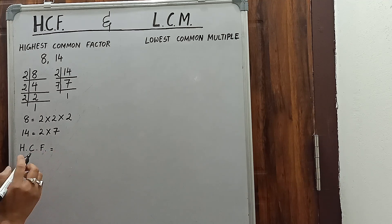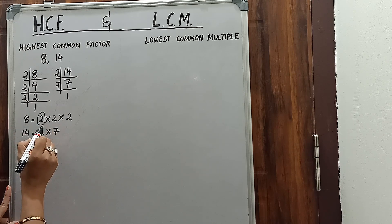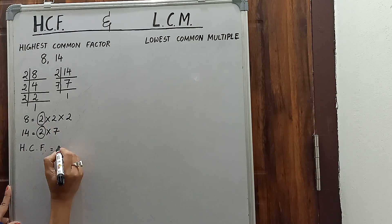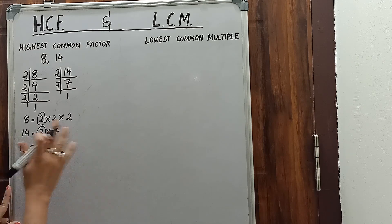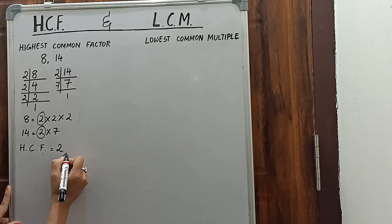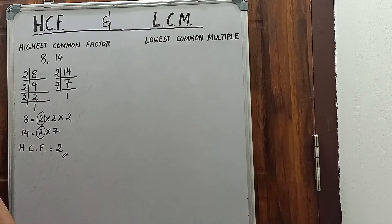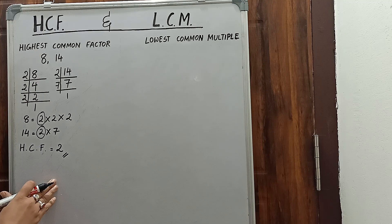HCF equals 2. We will see the common numbers among these. 2 is the common number, so we will write 1 two here. We don't have any other numbers in common, so we leave as it is. So 2 is the highest common factor of 8 and 14. I hope this HCF is clear to you.